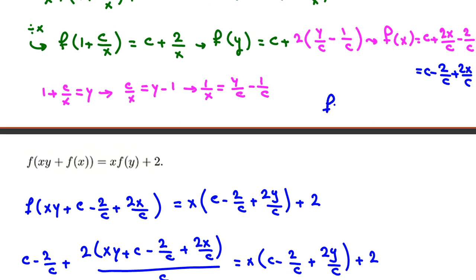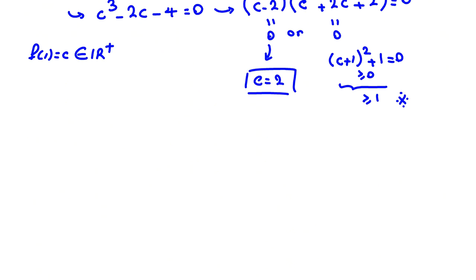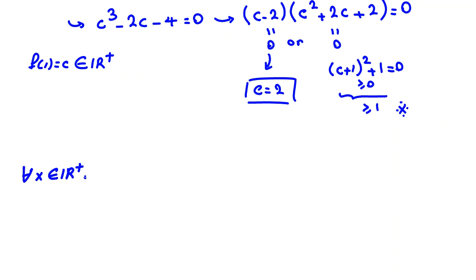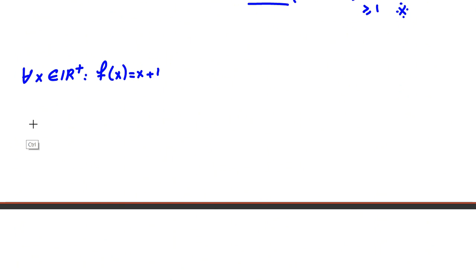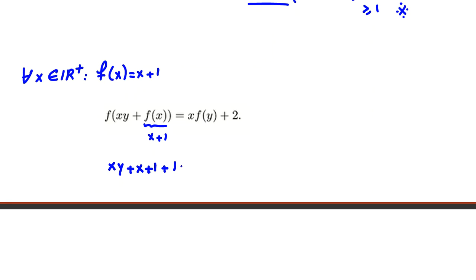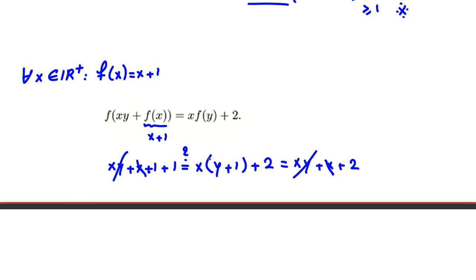With C = 2: f(x) = 2 − 2/2 + 2x/2 = 2 − 1 + x = x + 1. So f(x) = x + 1 for all x in ℝ⁺. Let's verify: f(xy) + f(x) = xy + 1 + x + 1 = xy + x + 2, and x·f(y) + 2 = x(y + 1) + 2 = xy + x + 2. They match, so f(x) = x + 1 is correct.